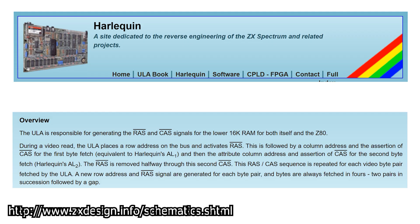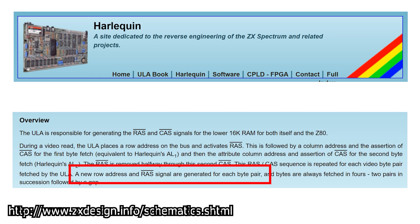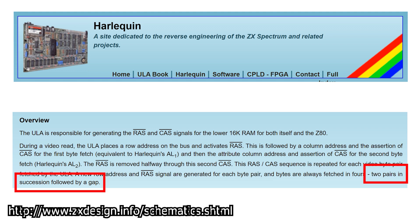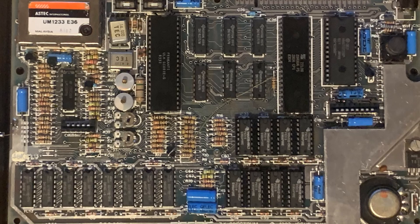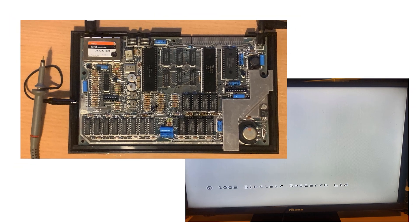Looking more closely at the Harlequin specs, it clearly states that RAS is asserted, then CAS for the bitmap read, and a second CAS for the attribute read. A new RAS signal is generated for each byte pair, and bytes are fetched in groups of four — two pairs in succession followed by a gap. I was really curious: if my state machine timing was wrong, what is the correct timing? I have an old 48K Spectrum, so I thought I'd have a closer look at these signals on the oscilloscope.